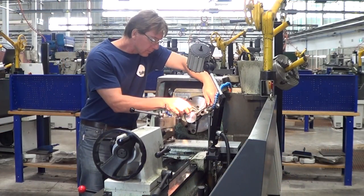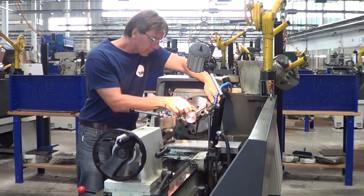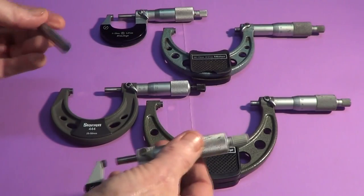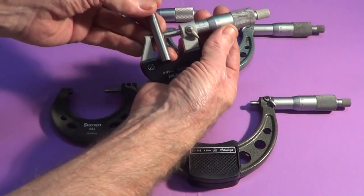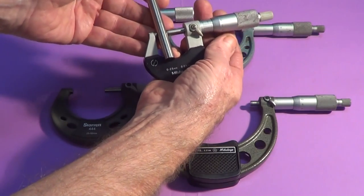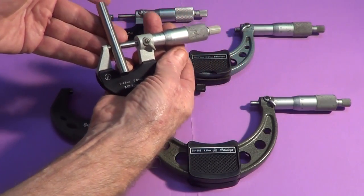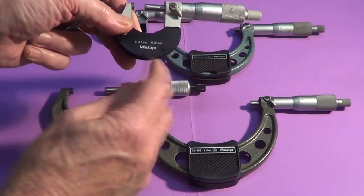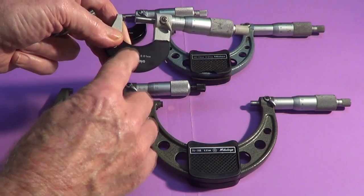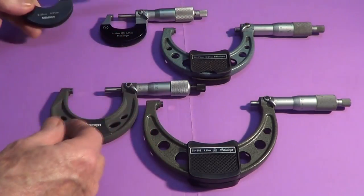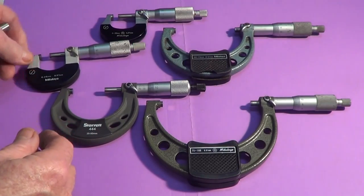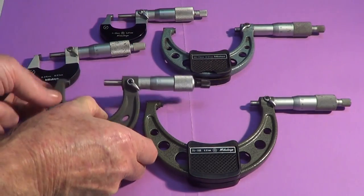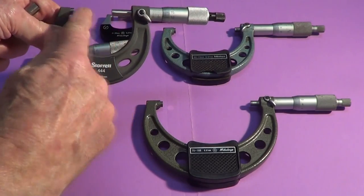Welcome to this video on micrometers and how to read them. When engineering components have to be manufactured to a high degree of accuracy, the best measuring tool to use is a micrometer. A micrometer is capable of measuring to one one-hundredth of a millimeter, which is about one-sixth of the diameter of the average human hair. So very accurate indeed.